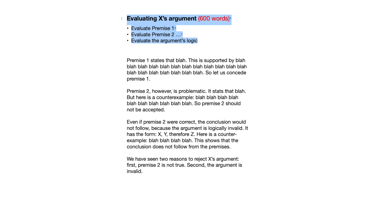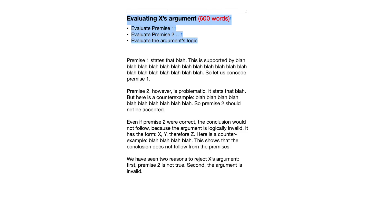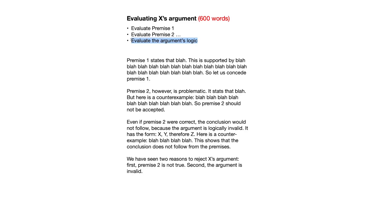Let's just take a look at how that would actually work in practice. Here I've got one section from my plan — let's just make it general. In this section I'm going to evaluate X's argument, where X can be absolutely anyone. I'm going to write 600 words on it by following each of these bullet points — one paragraph for each one. For each premise I'll evaluate it, then new paragraph for the next one, then evaluate the argument's logic, and then a little bit at the end where I say: so what? What is my interim conclusion? What have we learned from this? But brief.